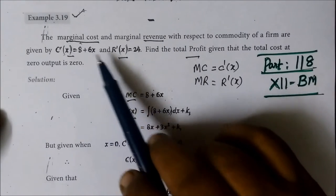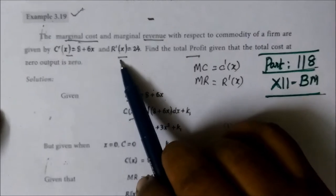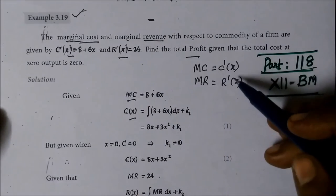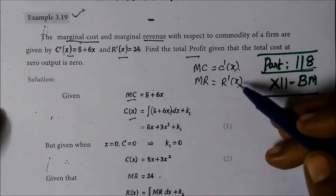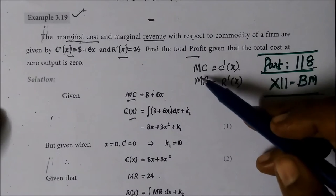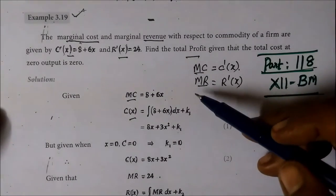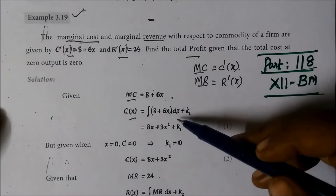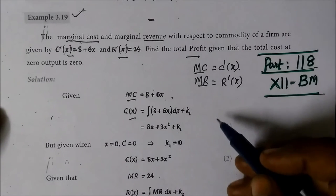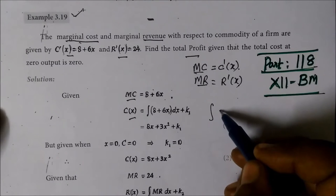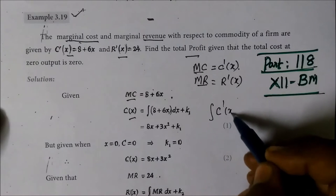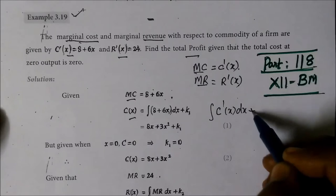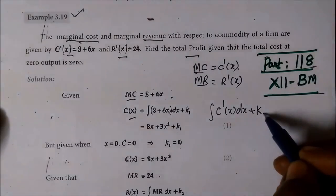Marginal cost C'(x) and marginal revenue R'(x). That is MC and MR. Now, C(x) equals integral C'(x) dx plus K. This is K₁.